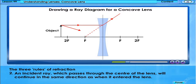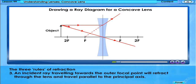An incident ray which passes through the center of the lens will continue in the same direction as when it entered the lens. An incident ray travelling towards the outer focal point will refract through the lens and travel parallel to the principal axis.